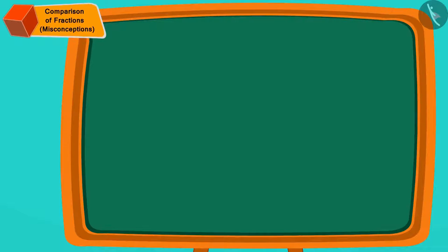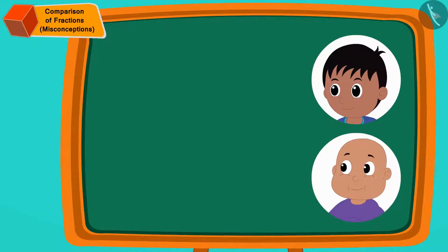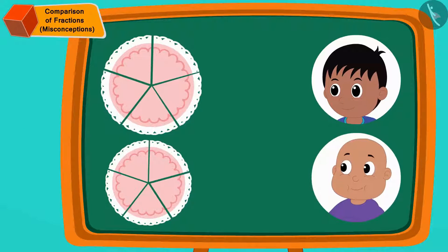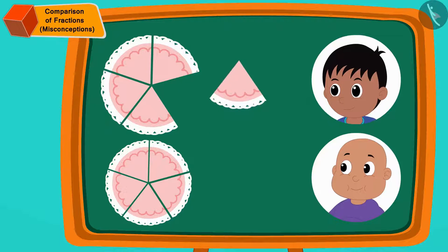Let us first look at the cake that Raju and Bablu got in the form of fractions. Raju got one piece out of five equal pieces of Appu's cake. Hence Raju got one fifth part of Appu's cake.